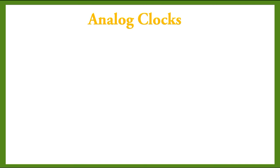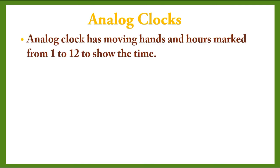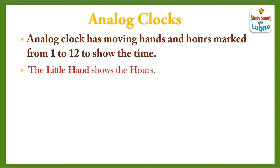What are Analog Clocks? An analog clock has moving hands and hours marked from 1 to 12 to show the time. The little hand shows the hours and the big hand shows the minutes.